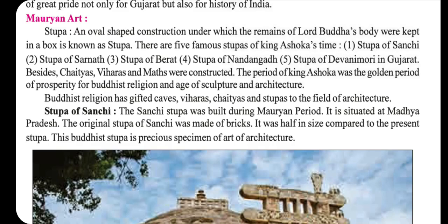Mauryan art is related to stupas. A stupa is an oval-shaped construction under which the remains of Lord Buddha's body were kept in a box.